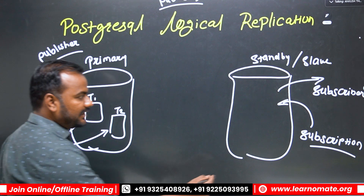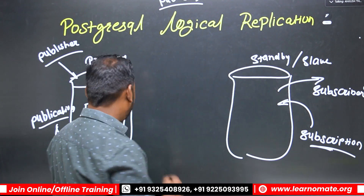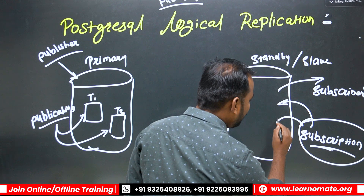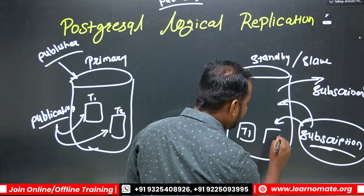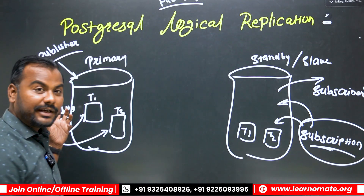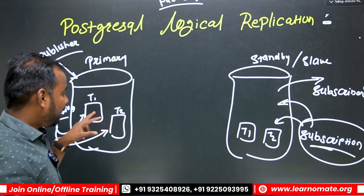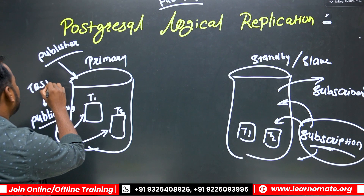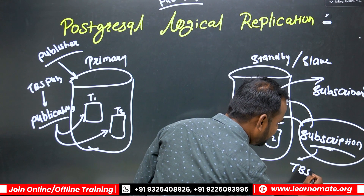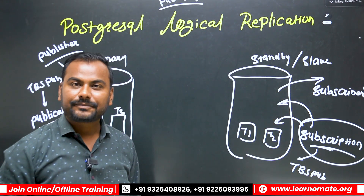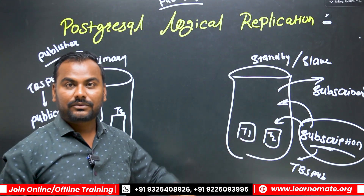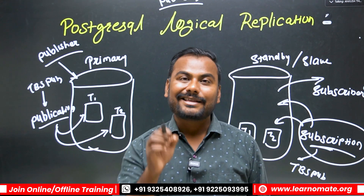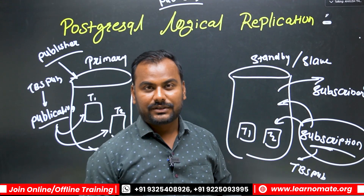For these two tables, the subscription is going to subscribe to the publication. So if I create a subscription for this publication — let's call it 'TBS pub' — then these two tables will be replicated over to the standby. As a DBA, you have control over what you want to replicate from master to slave. You can define those configurations in the replication.